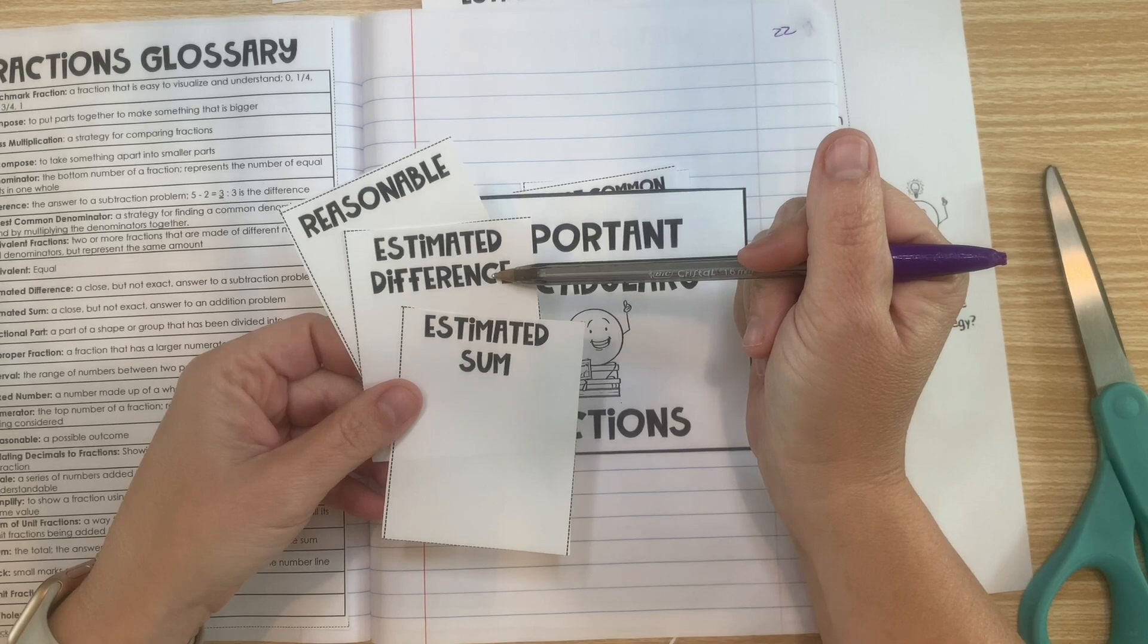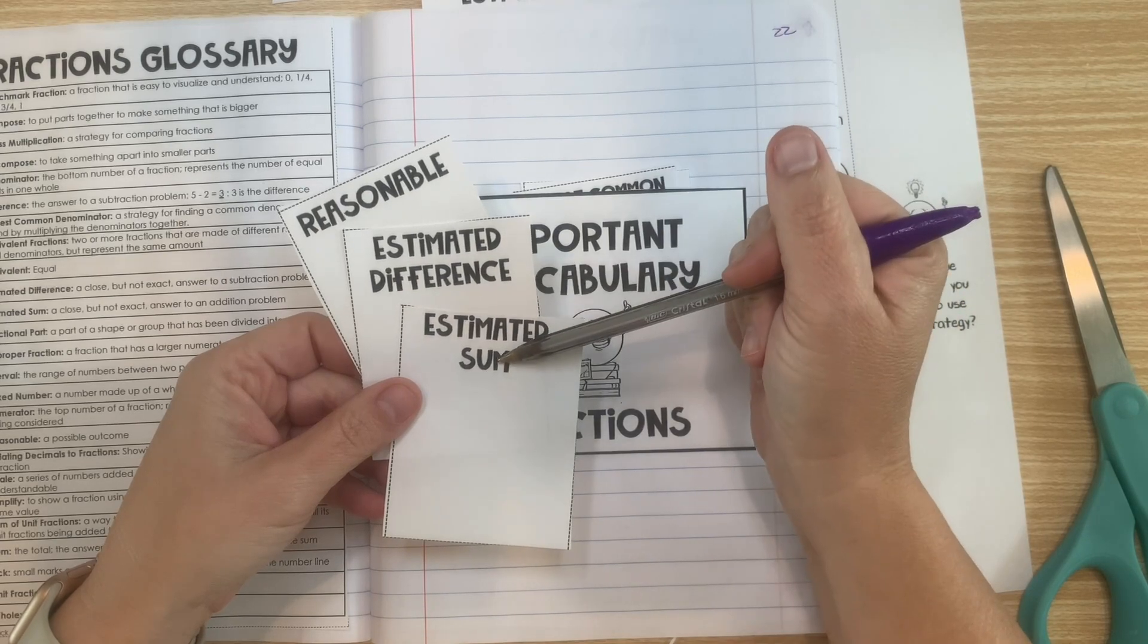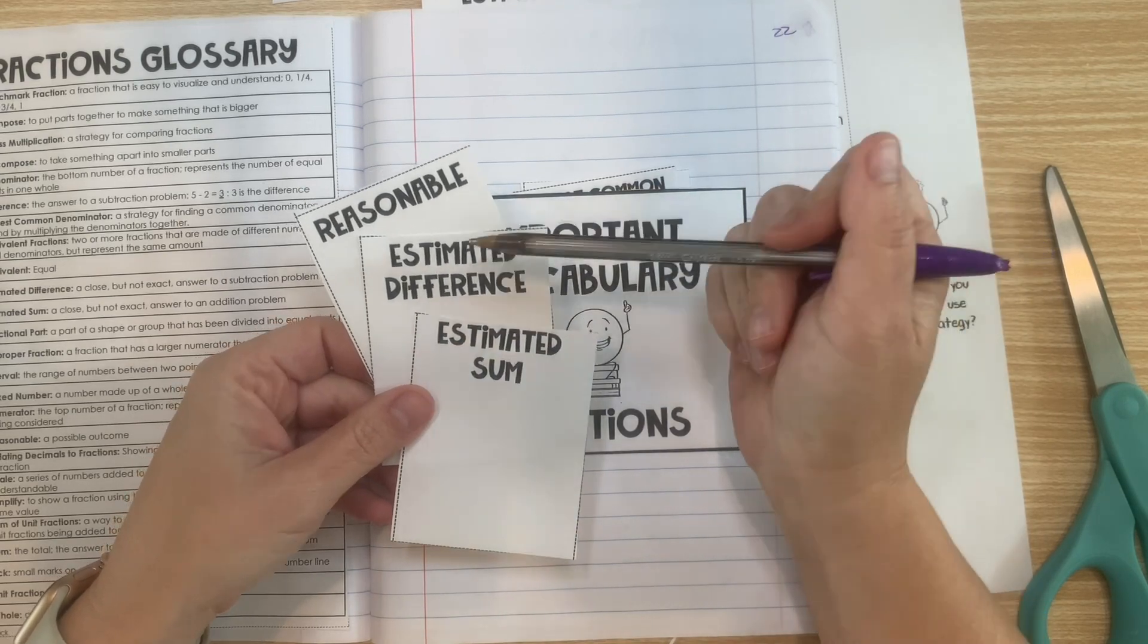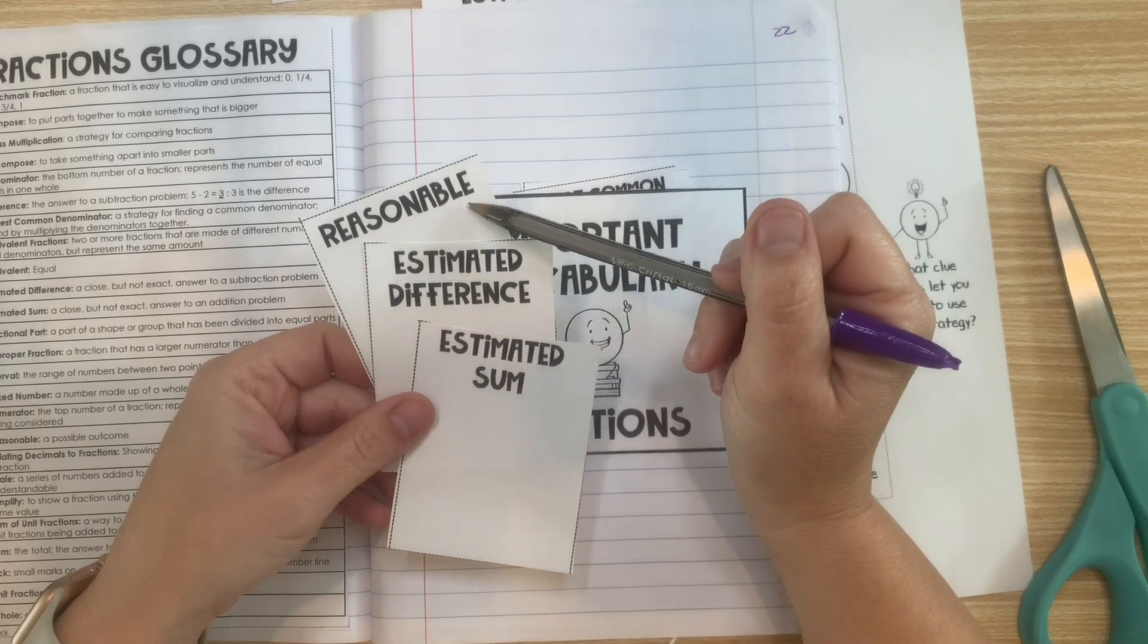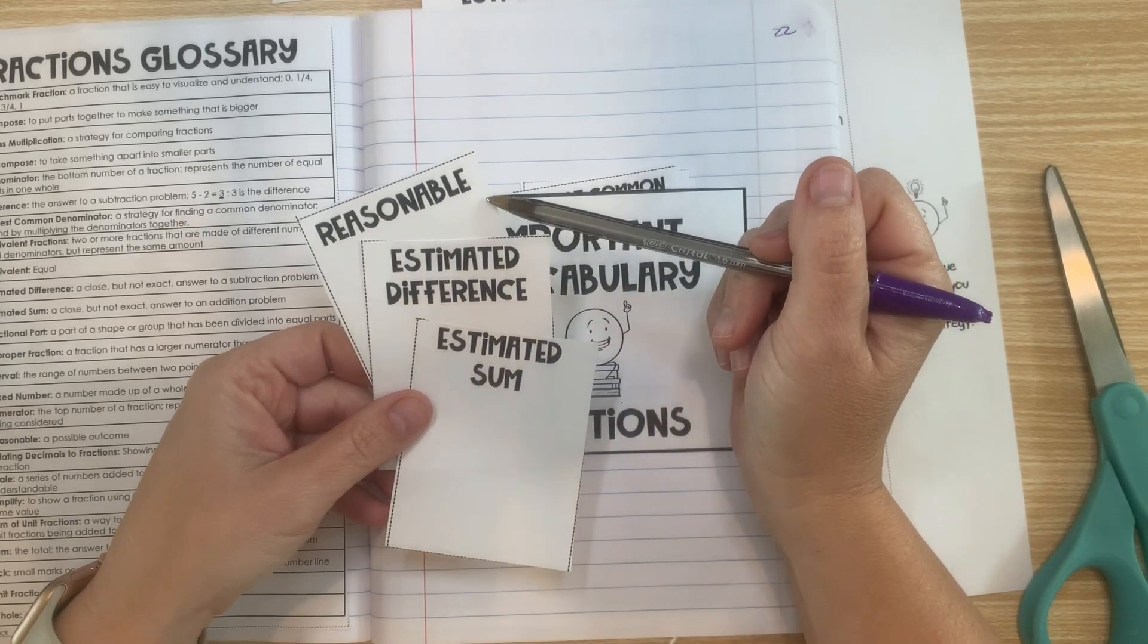So remember, a difference is the answer to a subtraction problem. A sum is the answer to an addition problem. And reasonable means could it be? Does it make sense?